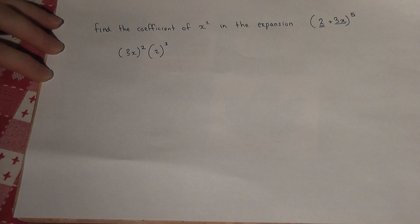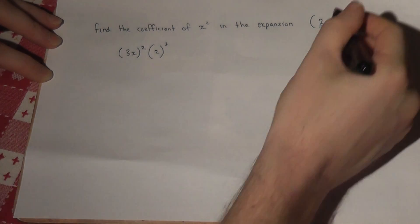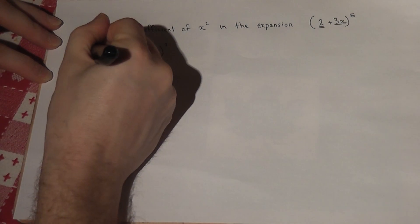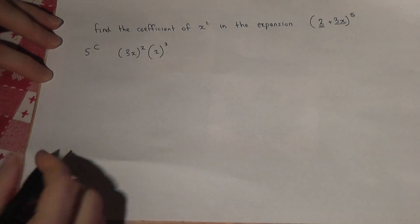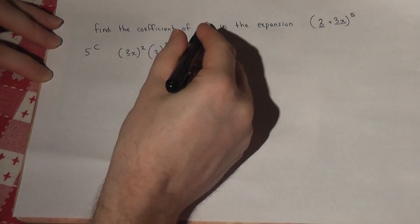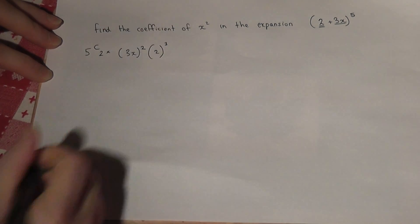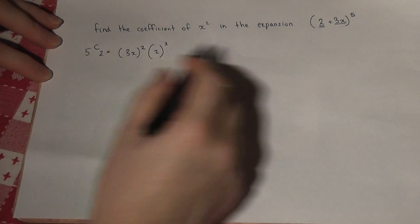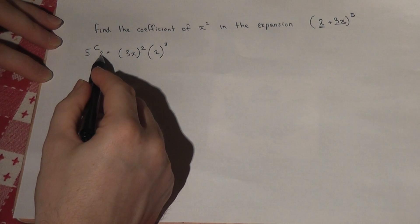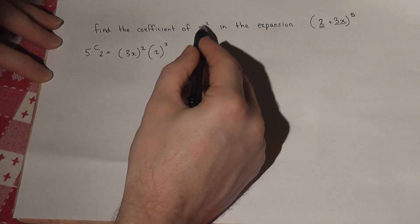There's then also a coefficient which comes from Pascal's triangle, but we can work it out by using combinations. And it comes from the overall power, which is 5c2. So 5c2. Again, 5 is the overall power, 2 is the required, in this case, power of x.